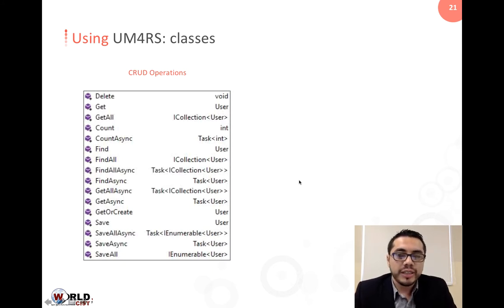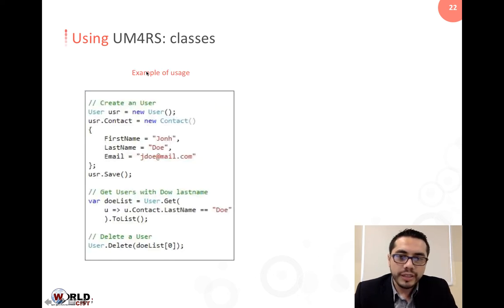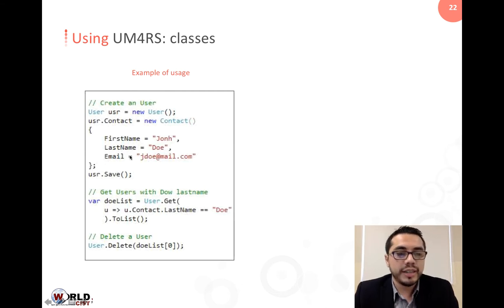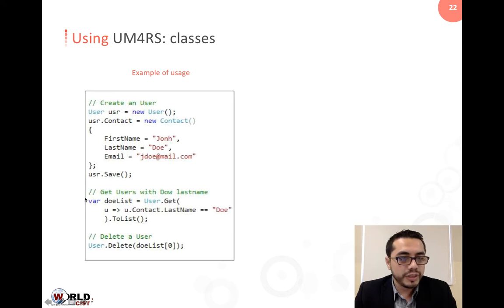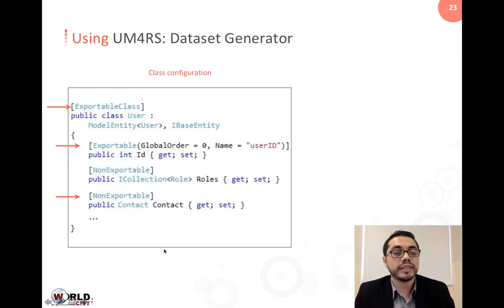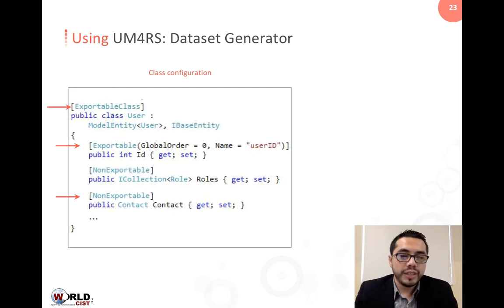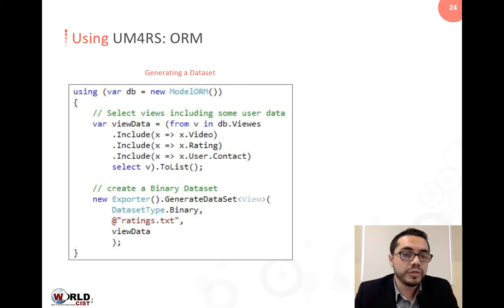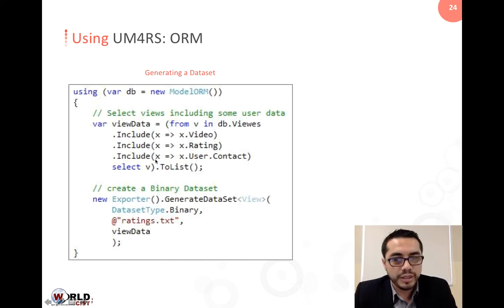All classes in the model have CRUD operations for create, read, update, and delete. An example shows how to create an instance of a user class, assign data to attributes, and save the data to the database. A second part shows how to obtain a list of users based on a given last name, and finally how to remove a record. There is also an example of how a class is configured for the dataset generator, and how to create a dataset from data in the database by selecting the desired data, specifying the format, and the destination.